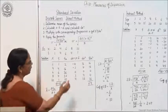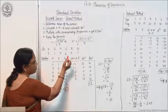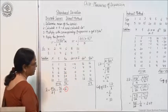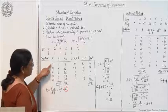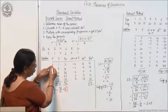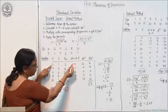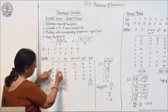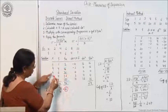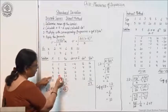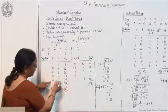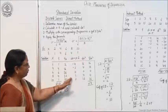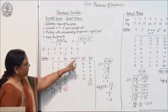Next step is to take out the deviations, which are x minus x-bar. x-bar is 6. So: 2−6=−4, 4−6=−2, 6−6=0, 8−6=2, 10−6=4. You calculate the dx column, that is x minus x-bar.